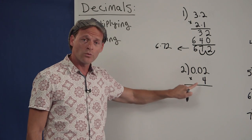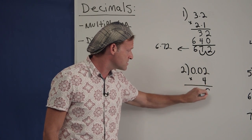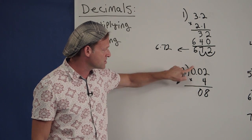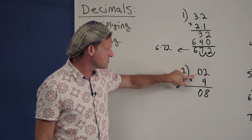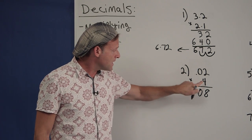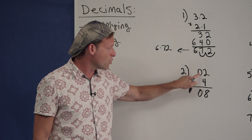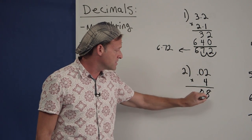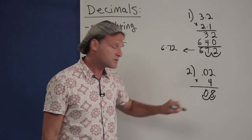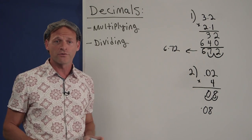Let's try another one. We're going to first multiply the digits out. 4 times 2 is 8. 4 times 0 is 0 — you don't need this zero here; we could erase it. It makes no difference, that's just for formality. Then count how many digits there are in total to the right of both decimals — there is 1 and 2. Take the invisible decimal and move it to the left two spaces. Our answer is .08. That's all there is to it.